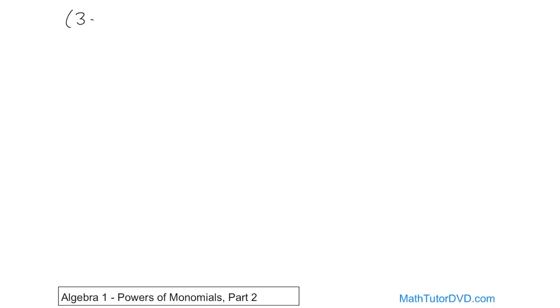If you have, for instance, 3 times a squared times b and you're raising the whole thing to the power of 3, what do you do? Well, this is a monomial with three separate entities inside, so this exponent gets distributed to everything.